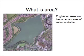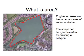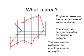Edgebaston Reservoir has a certain area of water available. The shape can be approximated by drawing a polygon. The area can be estimated by counting squares on a grid.